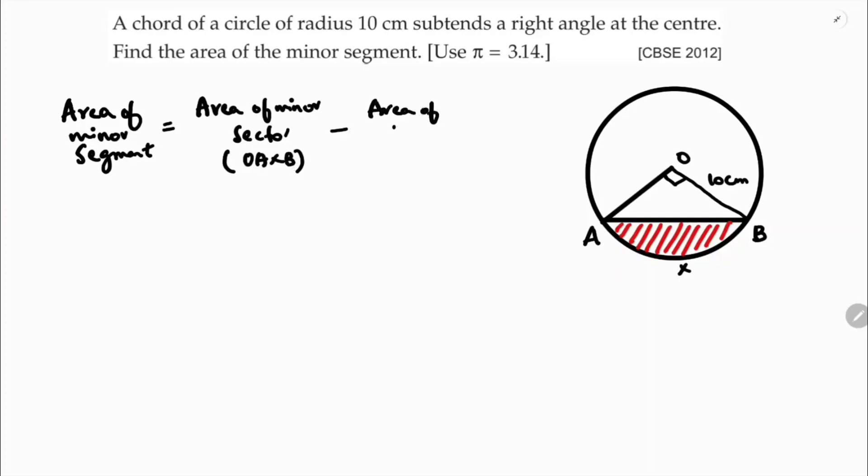Minus area of triangle OAB. So now area of a sector, you can name it as like quadrant. Area of sector: theta by 360 into π r square minus half base into height. So theta is 90 degrees, 90 by 360 degrees into 3.14, and radius is 10 into 10.